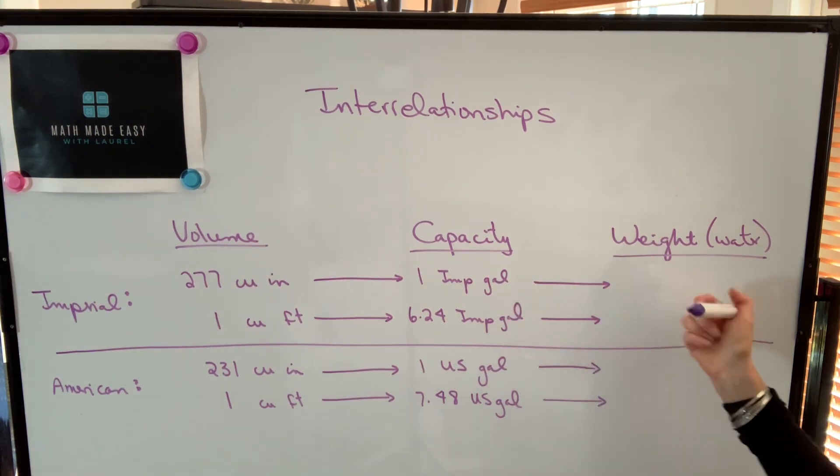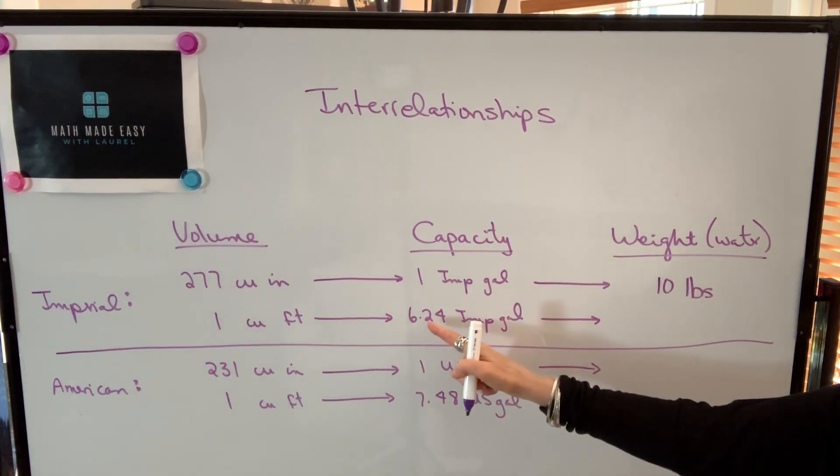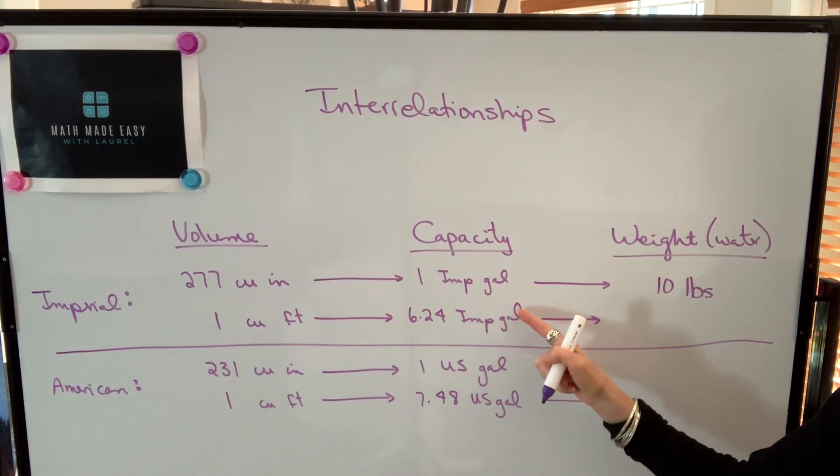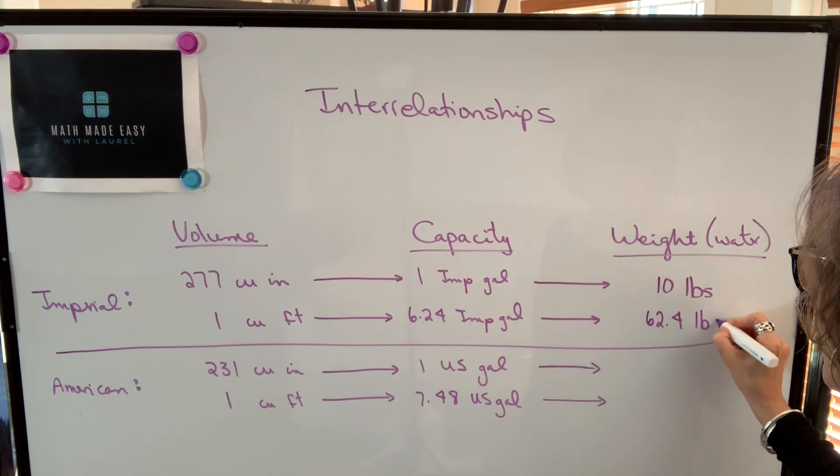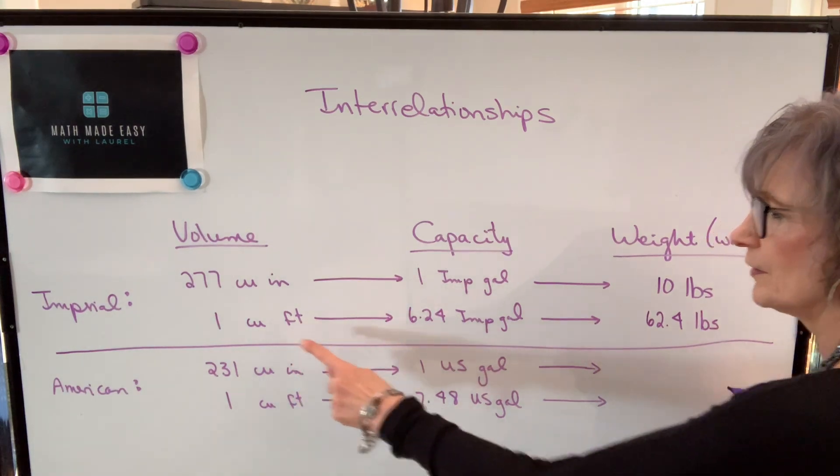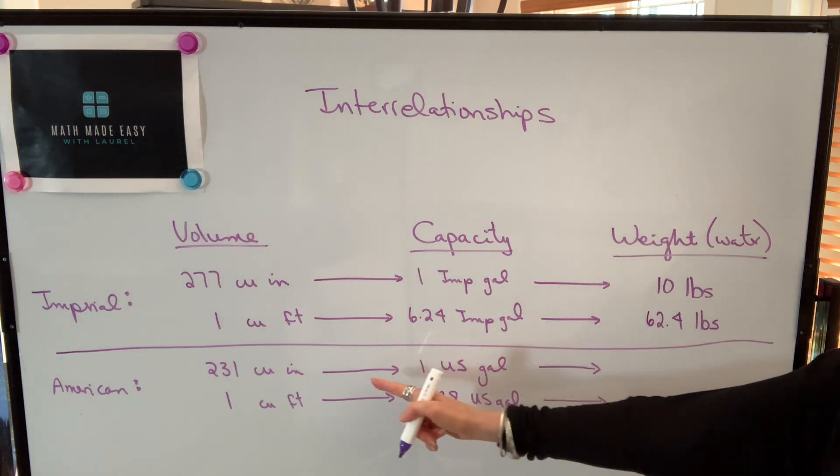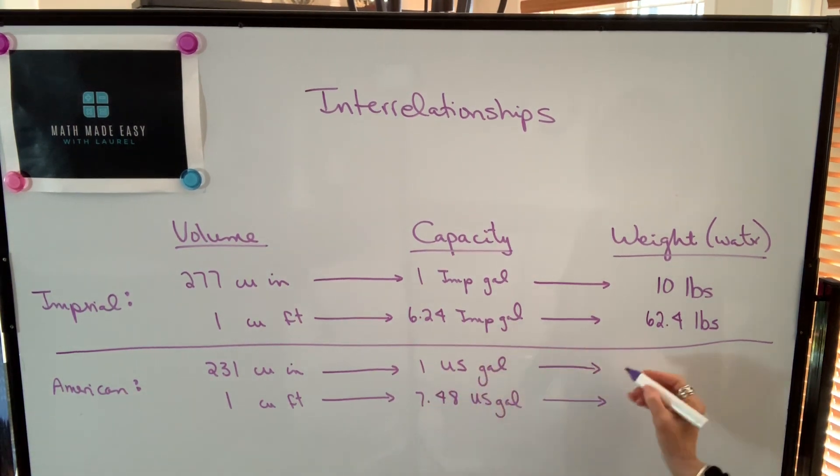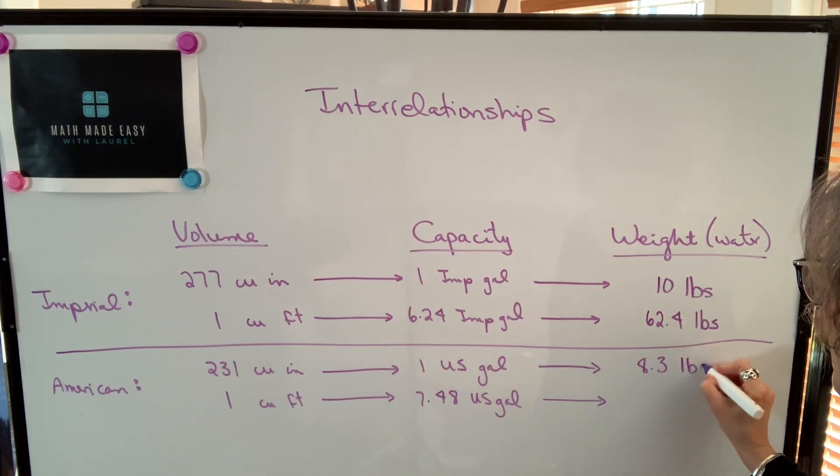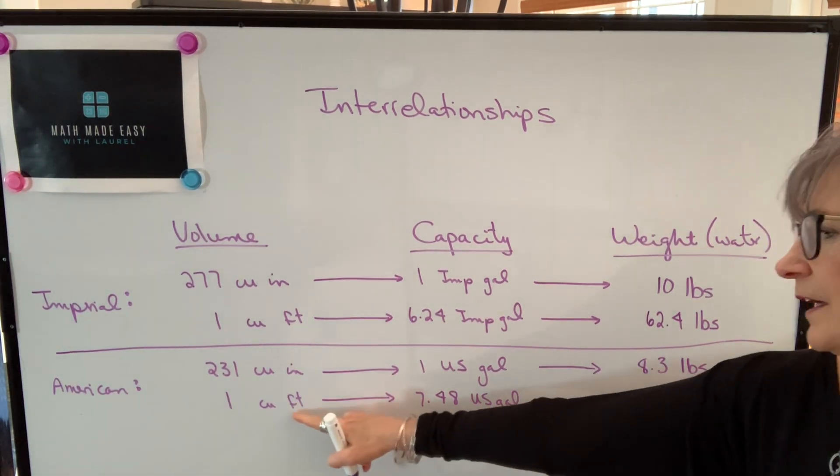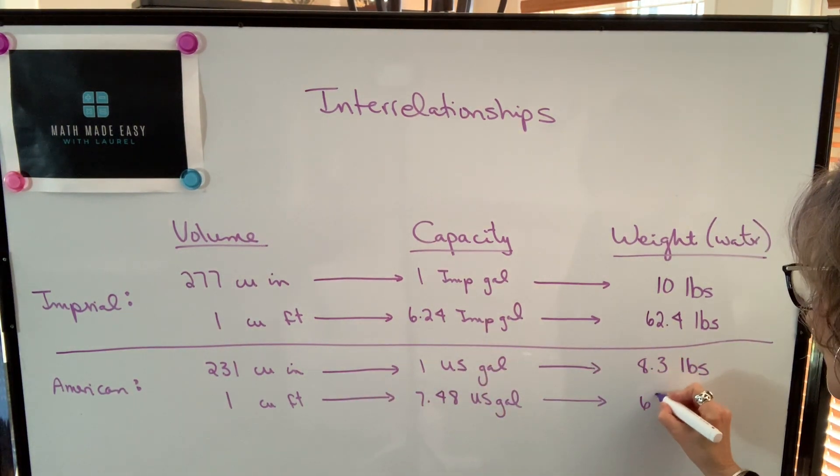If we were to talk about that quantity of water, one Imperial gallon of water weighs 10 pounds. Therefore, if we have 6.24 Imperial gallons of water, it would weigh 62.4 pounds. So in other words, a cubic foot of water weighs 62.4 pounds. If we're working with US gallons, they're smaller, so that amount of water, we're going to use 8.3 pounds as our weight. But again, a cubic foot of water still weighs 62.4 pounds.